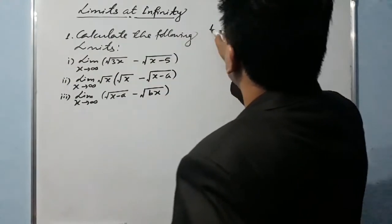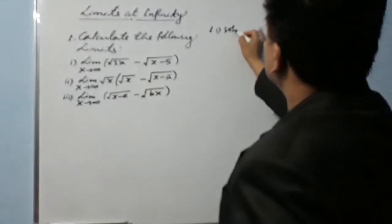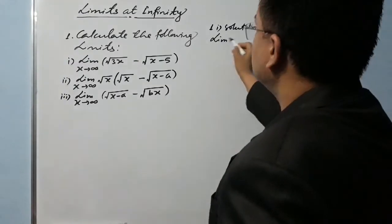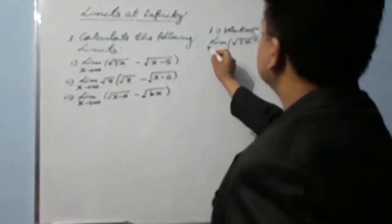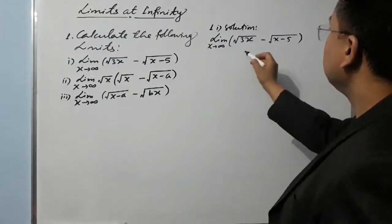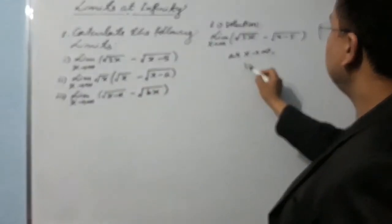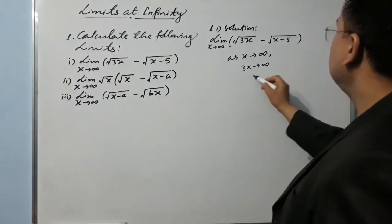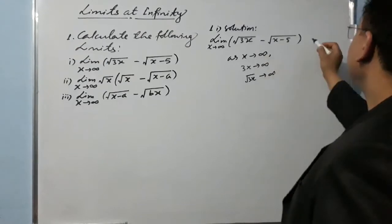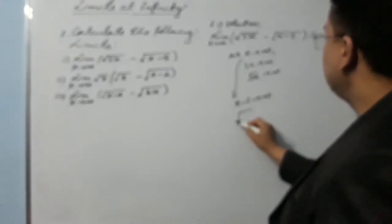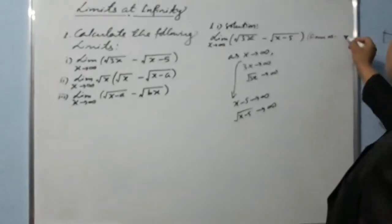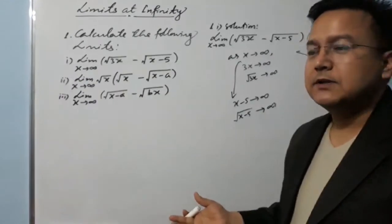Here we go. Solution of the first question: the limit of the function √(3x) minus √(x-5) as x tends to infinity. As x tends to infinity, 3x tends to infinity, and √(3x) tends to infinity. Similarly, x minus 5 tends to infinity, and √(x-5) also tends to infinity. So overall we have infinity minus infinity, which is an indeterminate form. This means we need to simplify.